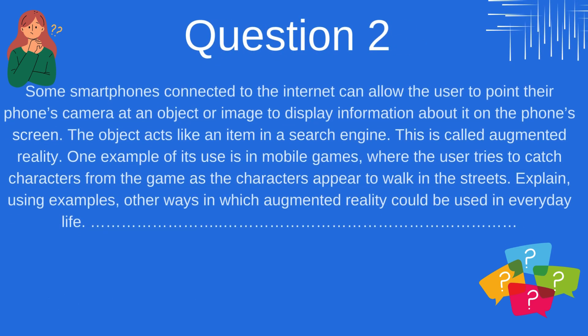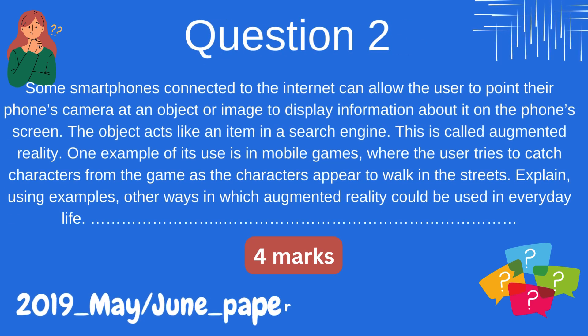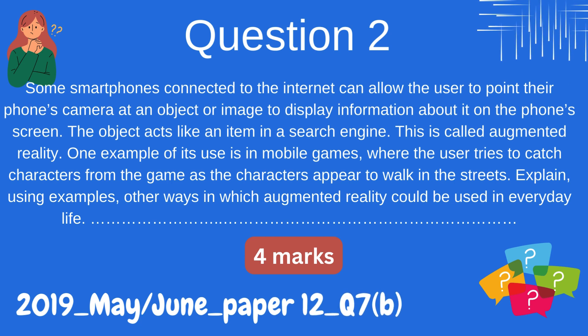Question 2. Some smartphones connected to the internet can allow the user to point their phone's camera at an object or image to display information about it on the phone's screen. The object acts like an item in a search engine. This is called augmented reality. One example of its use is in mobile games, where the user tries to catch characters from the game as the characters appear to walk in the streets. Explain, using examples, other ways in which augmented reality could be used in everyday life.